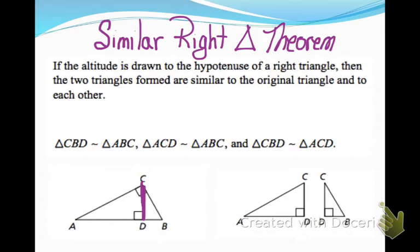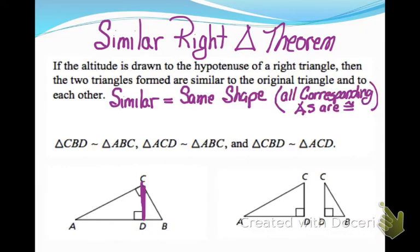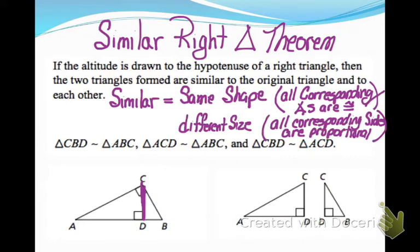It actually cuts the great big triangle into two smaller similar right triangles. So all three of those triangles are similar. Remember that similar means same shape, so all corresponding angles are congruent, different size, all corresponding sides are proportional. So we are going to set up proportions to find missing sides of similar right triangles.